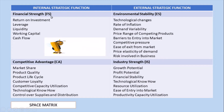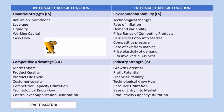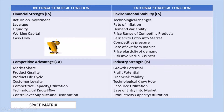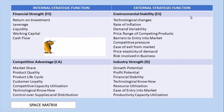Under Financial Strength, we discuss return on investment, leverage, liquidity, working capital, and cash flow. Also under internal strategic factors is Competitive Advantage, where we discuss market share, product quality, product life cycle, customer loyalty, competitive capacity utilization, technological know-how, and control over supplies and distribution.